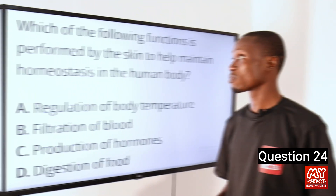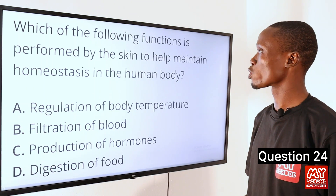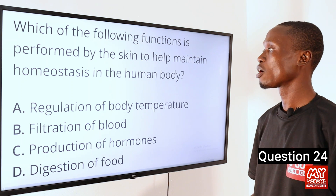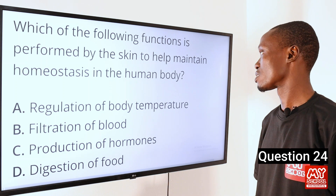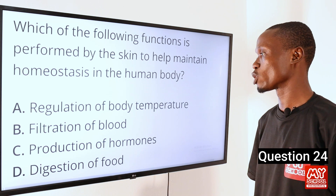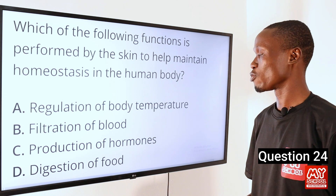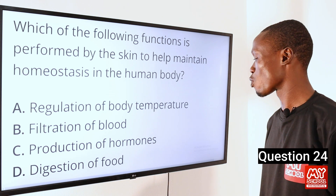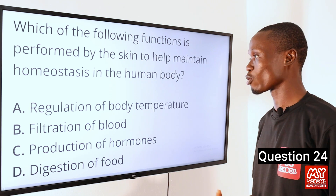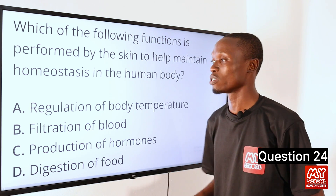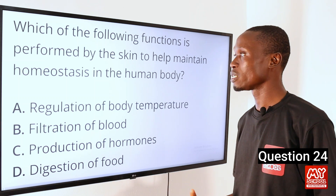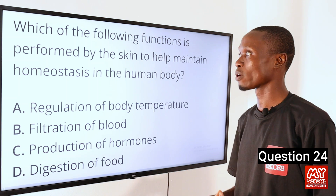Question 24. Which of the following functions is performed by the skin to help maintain homeostasis in the human body? A. Regulation of body temperature. B. Filtration of blood. C. Production of hormones. D. Digestion of food. The answer is option A, regulation of body temperature.